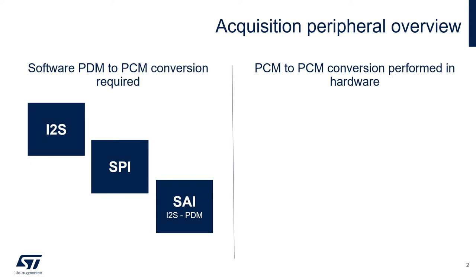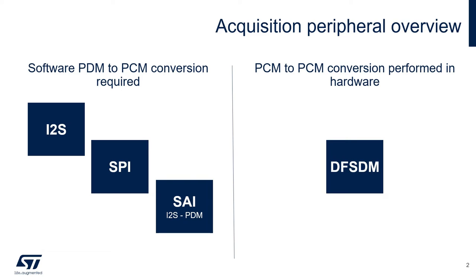SAI can always be used as an I2S interface, but on some STM32 it also embeds a specific PDM interface for multi-channel PDM acquisition. The DFSDM, on the other hand, can both acquire and convert to PCM. The user doesn't even see the PDM data since the peripheral will provide the PCM samples directly.